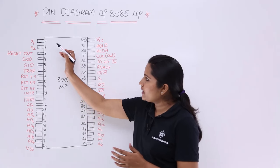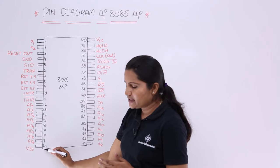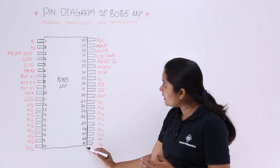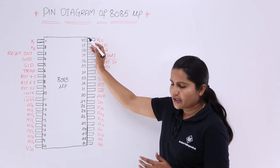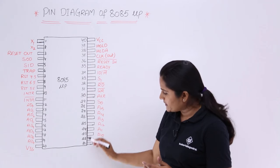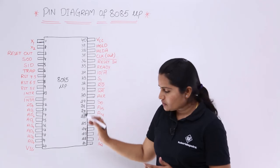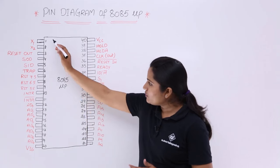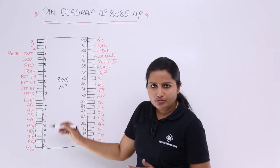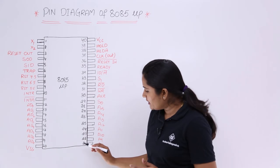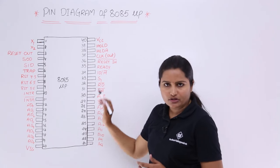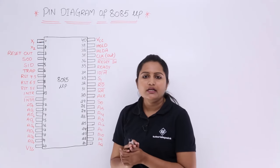Here you can observe pins 1 to 20. From pin 21 to 40 they are arranged upside down. So that means pins 1 to 20 go from top to bottom, and pins 21 to 40 go from bottom to top.